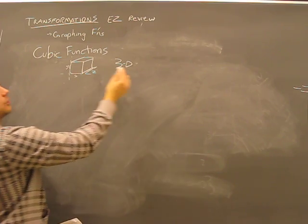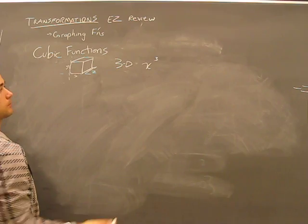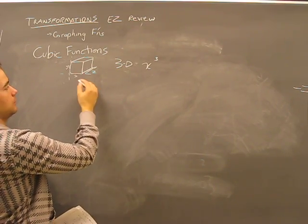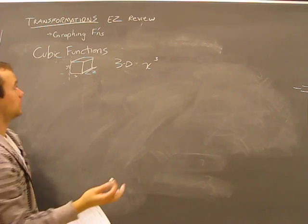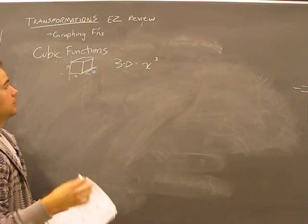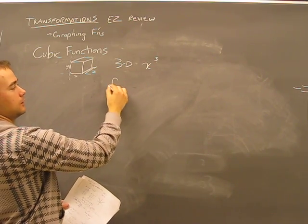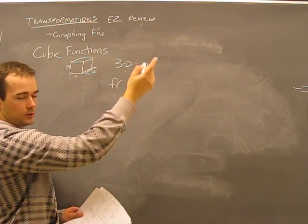The volume of this cube would be x cubed. Makes sense then that the degree of this function to have a cubic, sorry, not equation. The degree of a cubic function would also be a cube, a 3 above the x.